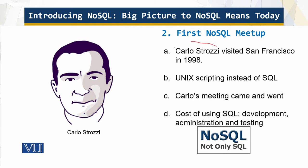Carlos Strozzi is the person who coined the name NoSQL, and this is the first documented use of the term, in 1998. He was visiting San Francisco and wanted to get people together to talk about his lightweight relational database. That meeting came and went, and developers continued to experiment with alternate query mechanisms — NoSQL here meaning data is retrieved using Unix scripting instead of SQL.